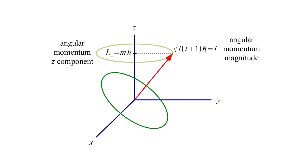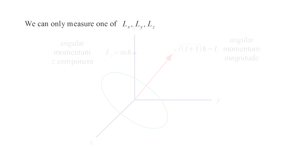We've seen that quantum mechanics tells us it's possible to know the magnitude of an electron's angular momentum and its projection along one direction in space. So we can only measure one of the three components of L.